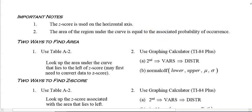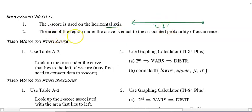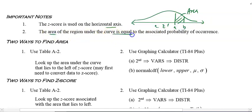Important notes about the z-score — we're going to use this for the next few weeks. The z-score is used on the horizontal axis. The area of the region under the curve equals the associated probability. Whatever area is between points a and b on the bell-shaped curve, that area equals the probability that x is between a and b. Whether you include endpoints or not doesn't matter for continuous distributions.